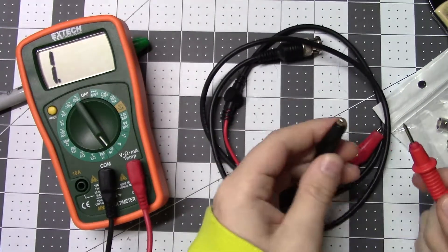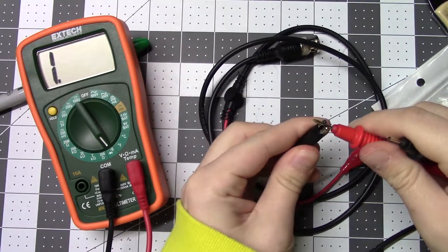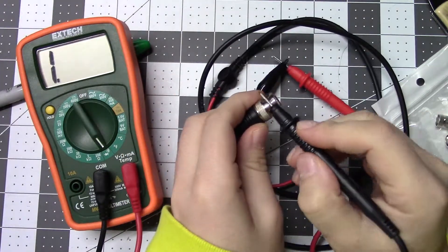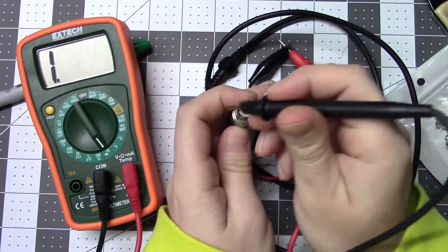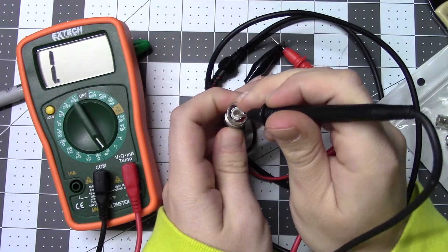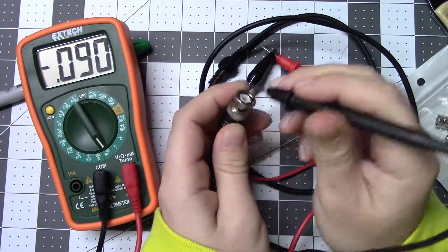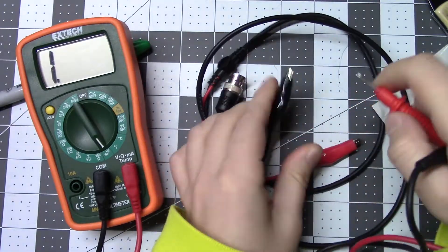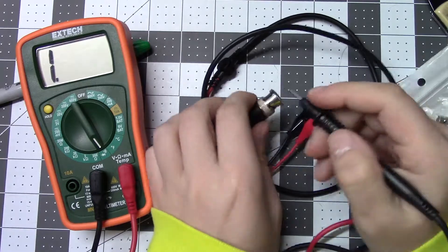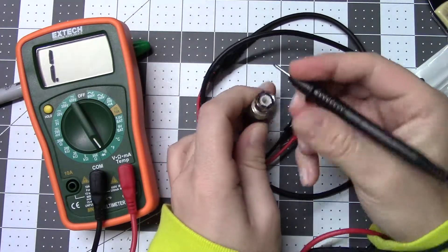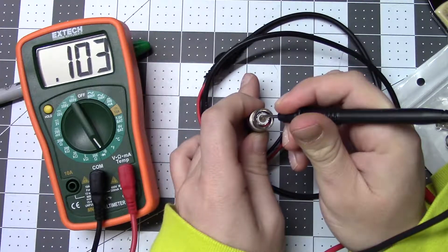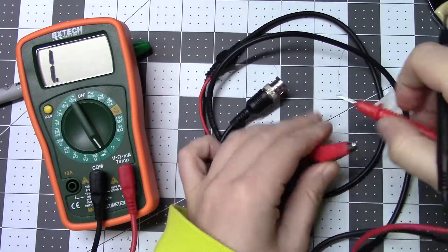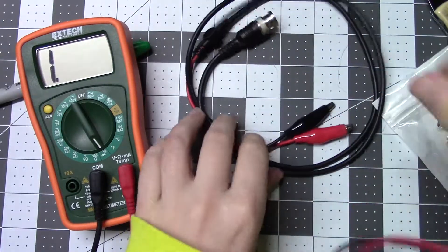So let's just check this cable here before we get too carried away. That side's good. Should have nothing here. The center pin. So, we know the cable's good.